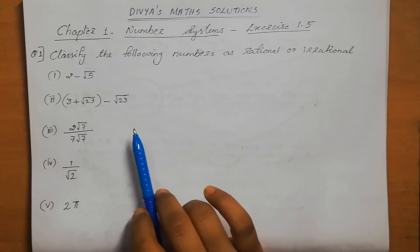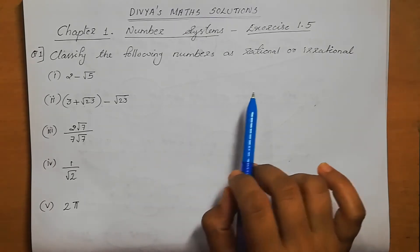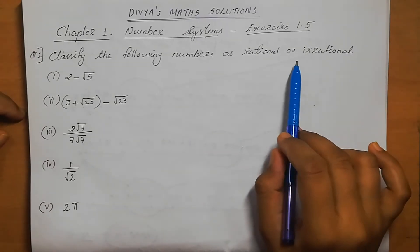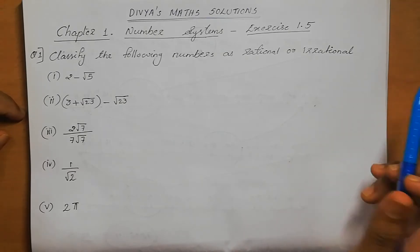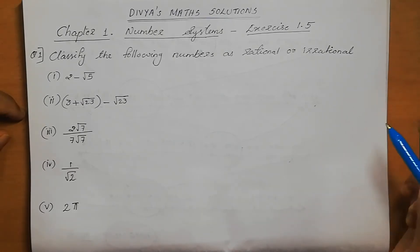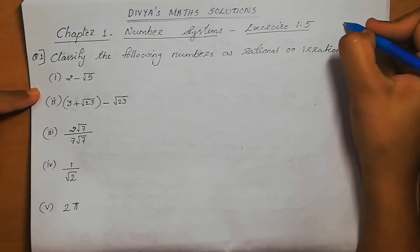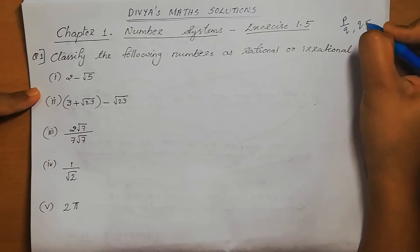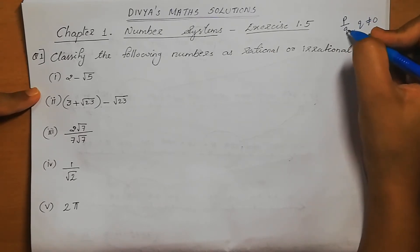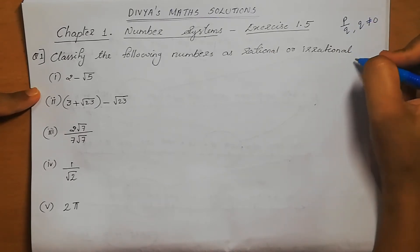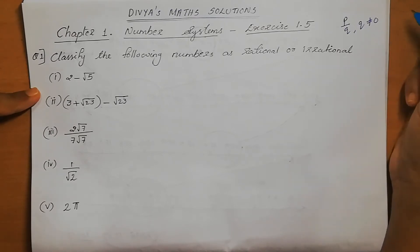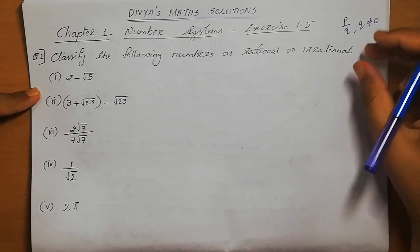Question number 1: Classify the following numbers as rational or irrational. A rational number is one which can be expressed in the form P by Q, where Q is not equal to 0 and P and Q are integers. Irrational means the number which cannot be expressed in the form of P by Q, where P and Q are integers.